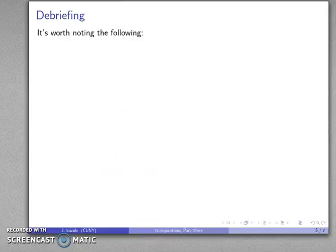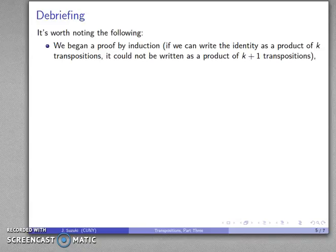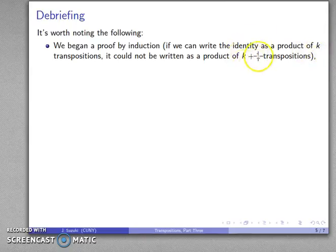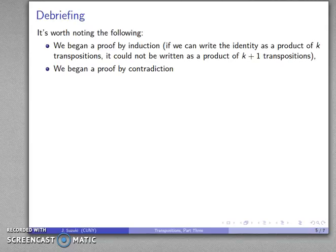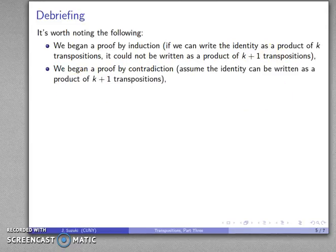It's worth noting the following. We began by thinking this might be a good proof by induction, because the key step seems to be: if we could write the identity as a product of k transpositions and we know something about k, we know something about k plus 1. So this looks like a good proof by induction. And because we wanted to prove something was impossible for k plus 1, we tried a proof by contradiction. We assumed the identity could be written as a product of k plus 1 transpositions.